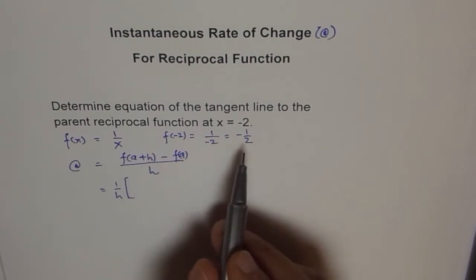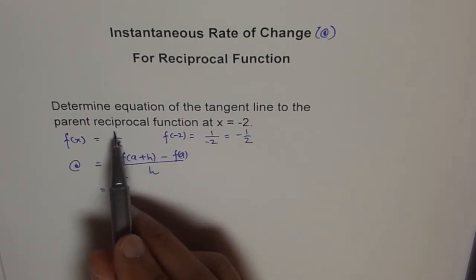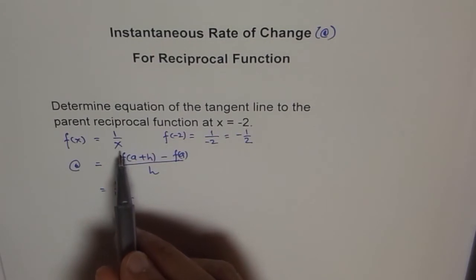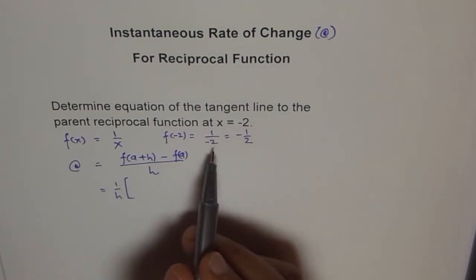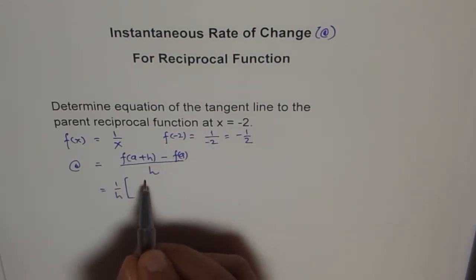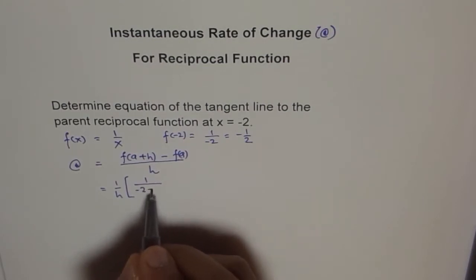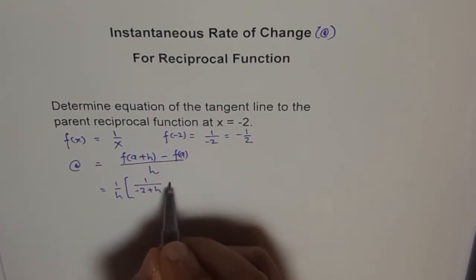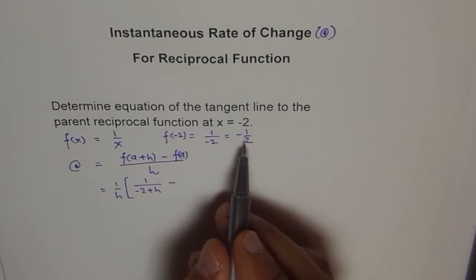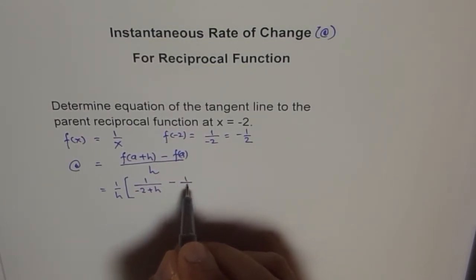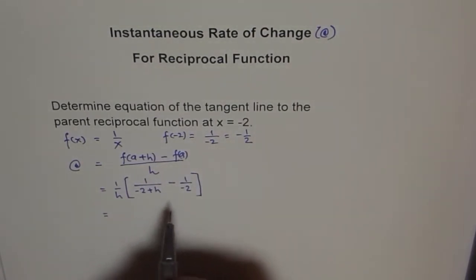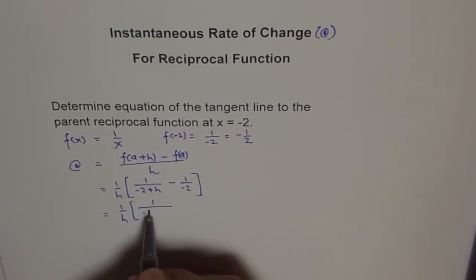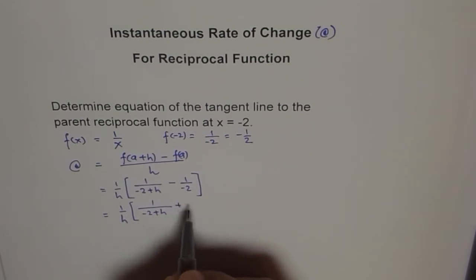For this function f of x equals 1 over x, I will replace x with a plus h where a is minus 2. So we write 1 over h times the quantity 1 over negative 2 plus h, minus f of a which is minus 1 over 2. This simplifies to 1 over h times 1 over negative 2 plus h, plus 1 over 2.